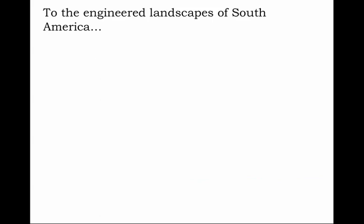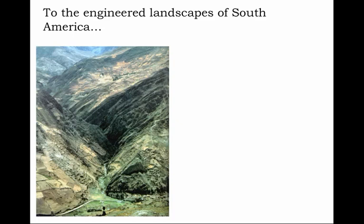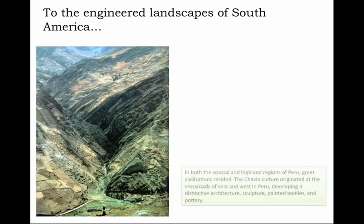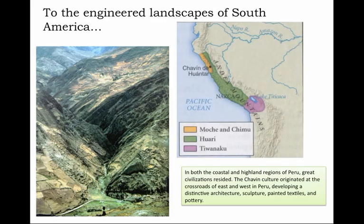From ancient North American landscapes and cultures to the extraordinary engineered landscapes of South America: the great Andes mountain range provides the setting for some of the most remarkable human civilizations in world history. In both the coastal and highland regions of Peru, Chile, and Bolivia, great civilizations resided. The Incas were just the most recent of these. Long before Pizarro and the Spaniards, there were other cultures — the Chavin culture, for example, which originated in Peru, developing a distinctive architecture, sculpture, painted textiles, and pottery.